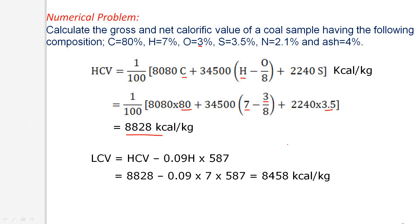When we know the HCV value, it is easy to calculate LCV using the formula: LCV = HCV − 0.09H × 587 kilocalories per kg. Substituting HCV = 8,828 and H = 7%, we obtain LCV = 8,458 kilocalories per kg. In this way, we can calculate the calorific value of any fuel using Dulong's formula when we know the constituents present in the fuel.